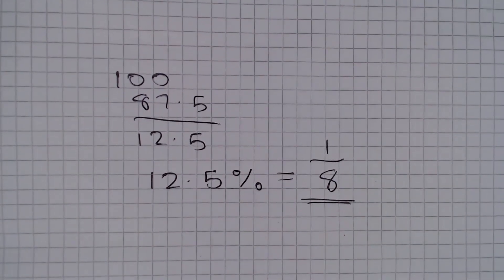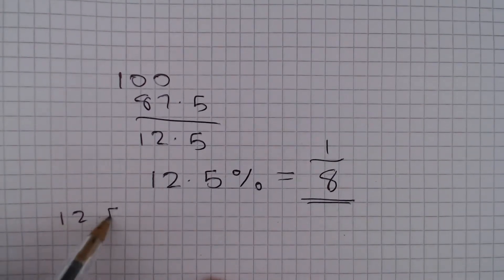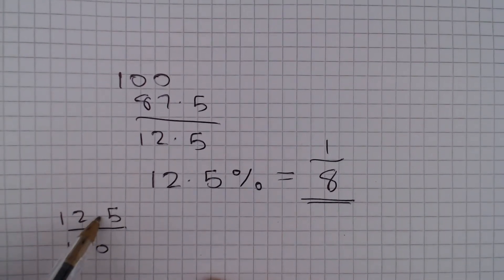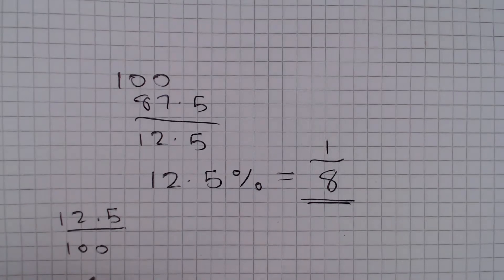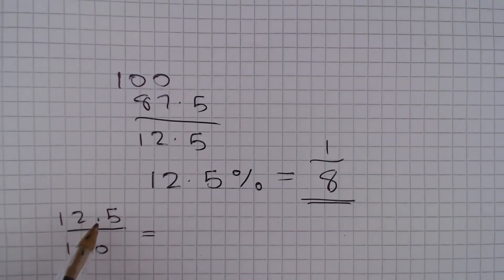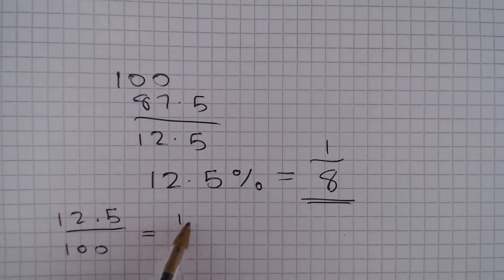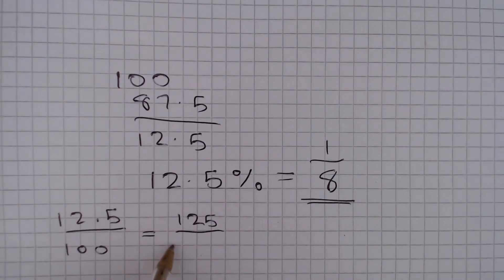Now if you didn't know that, what we could do is say well 12.5% is 12.5 out of 100, because percentages are always out of 100. And we are not really allowed decimal points with fractions, so what we are going to do is divide top and bottom by 10 to remove that decimal point. And this will give us 125 over 1000.